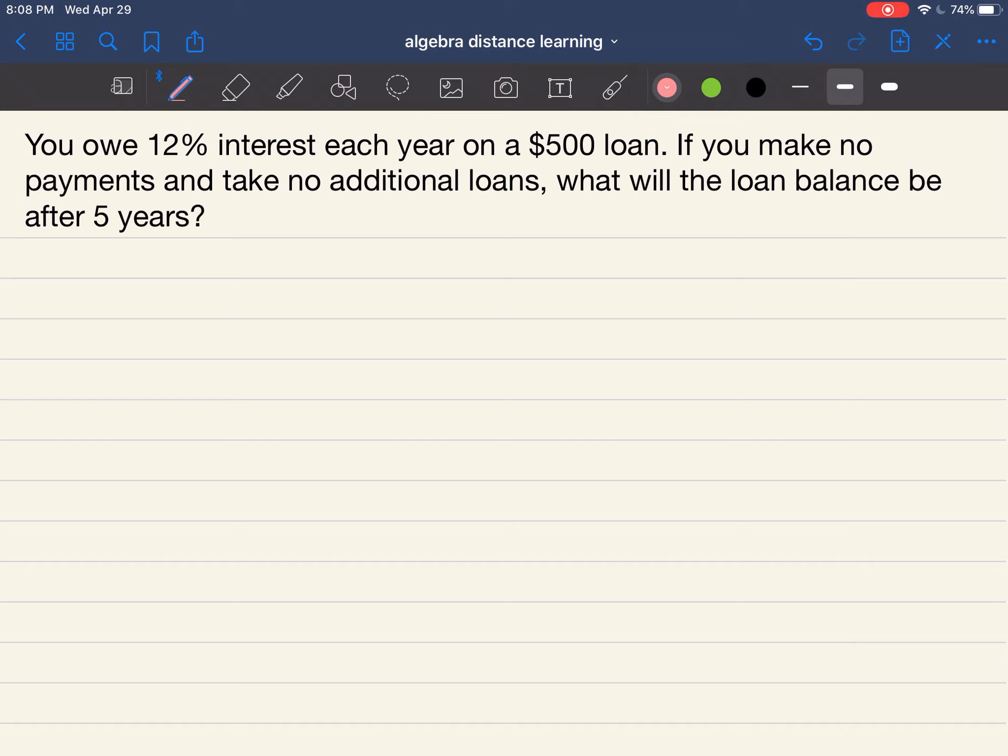So if we look right here, our problem says you owe 12% interest each year on a $500 loan. If you make no payments and take no additional loans, what will the loan balance be after five years?